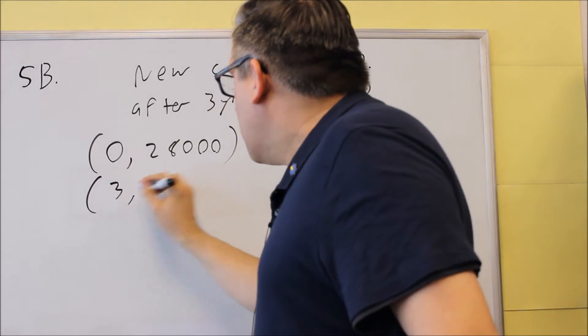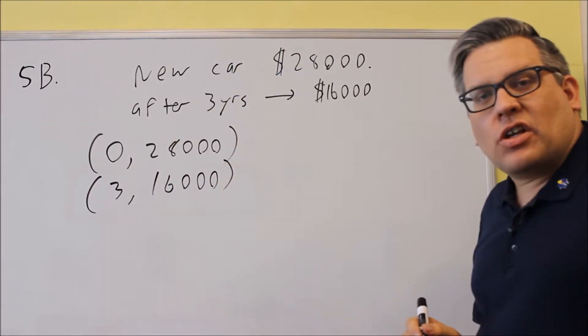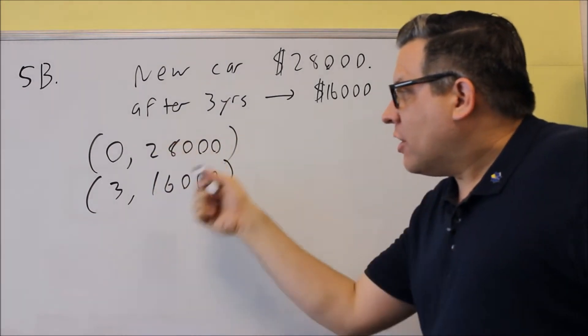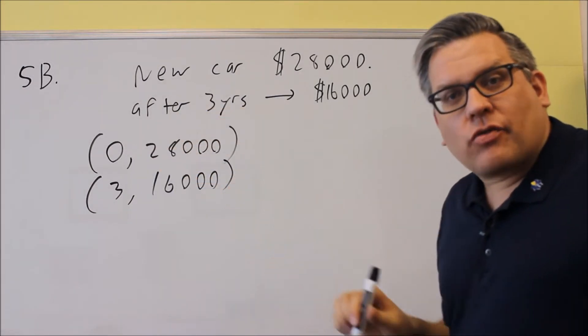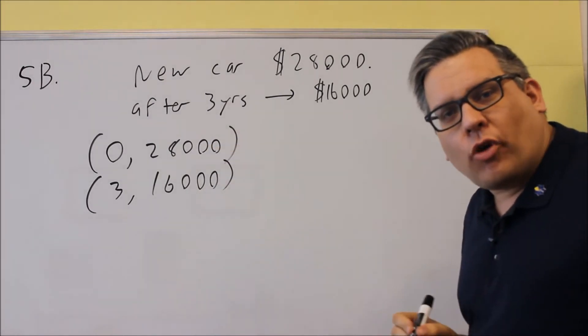Next, after three years, it's worth $16,000. We've created two points, and we're going to find the equation of the line that passes through these two points.